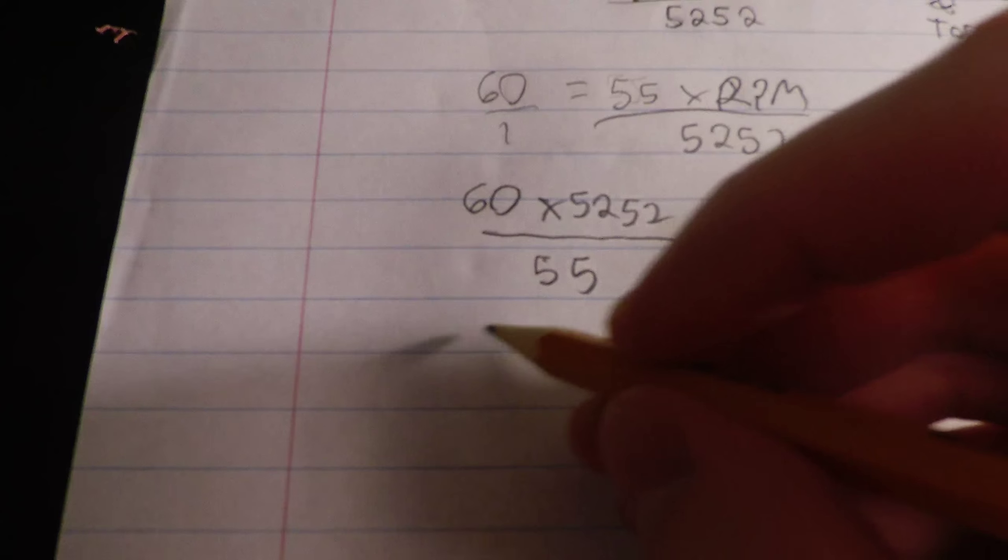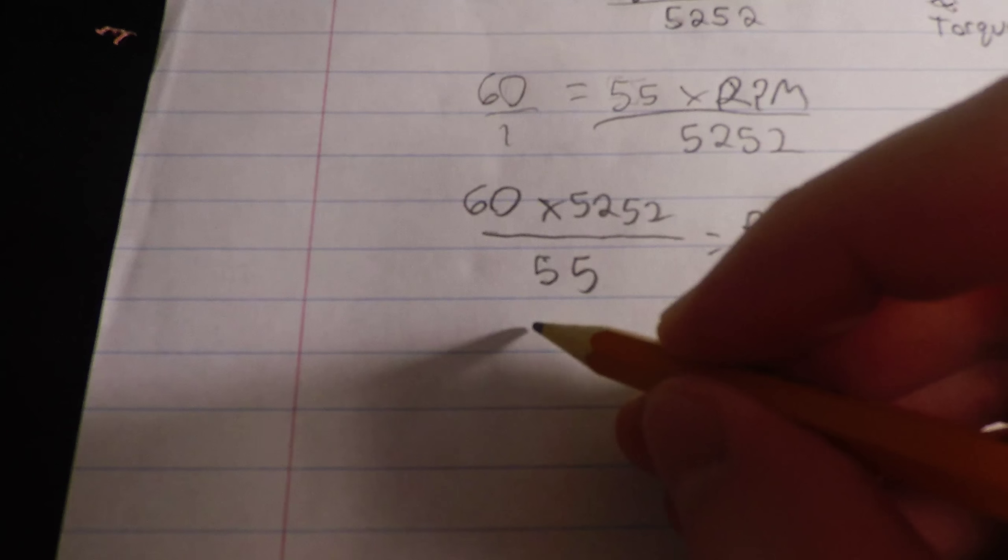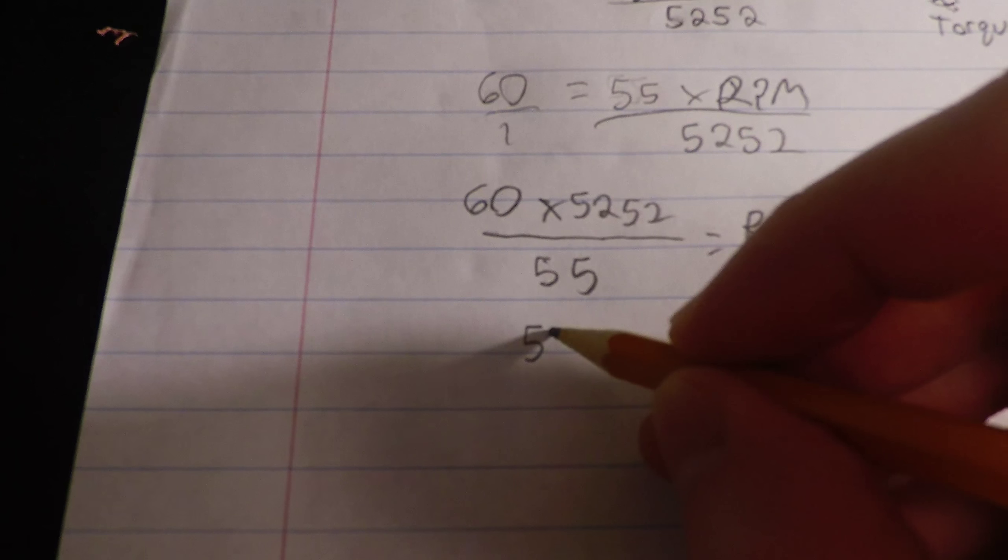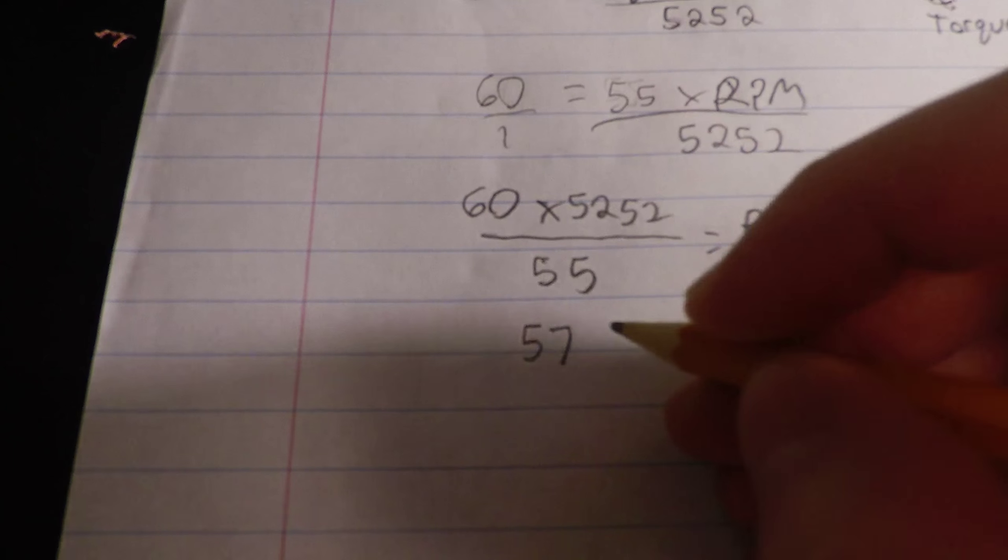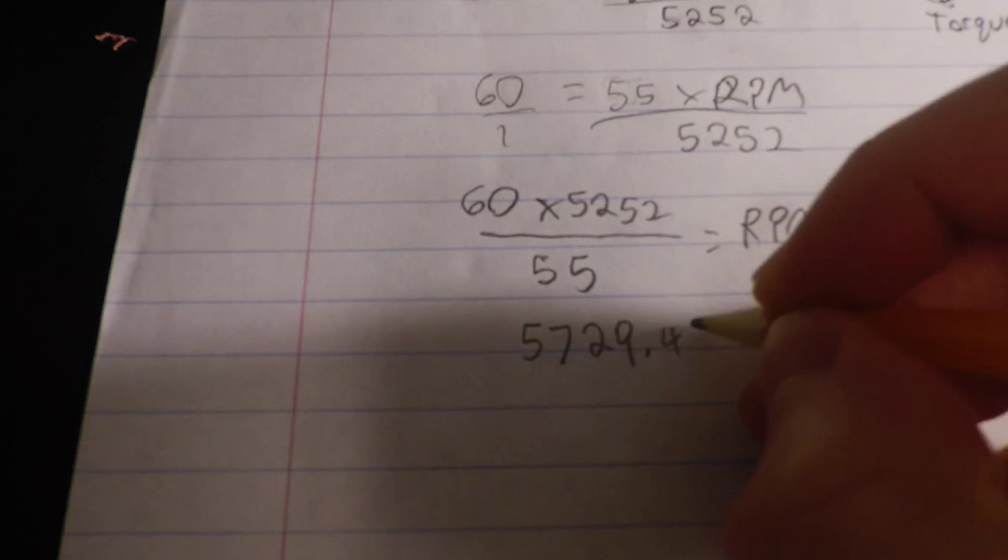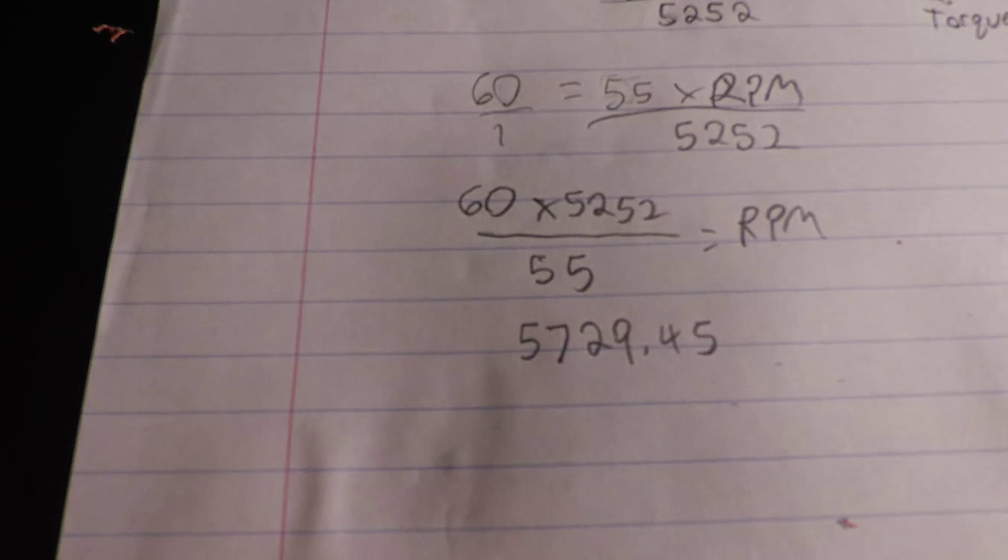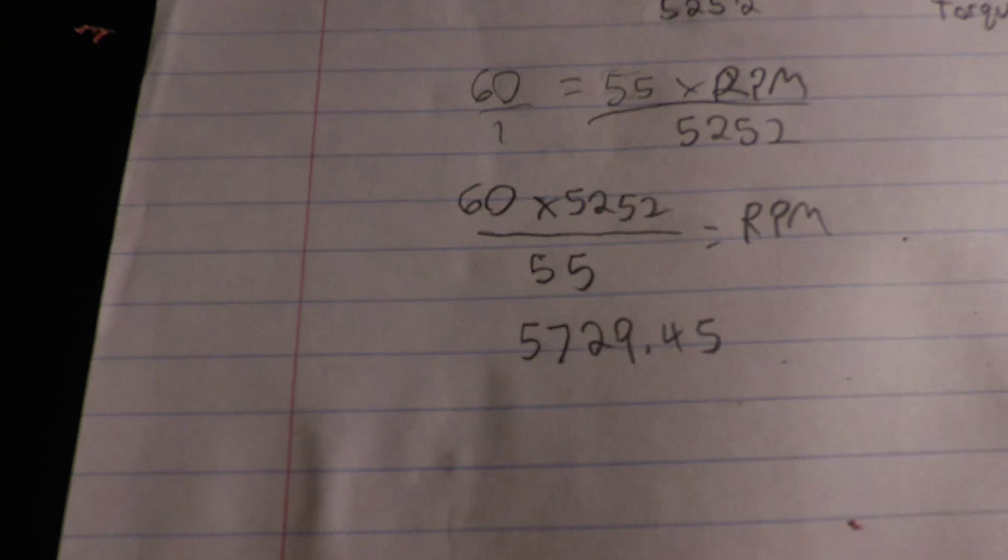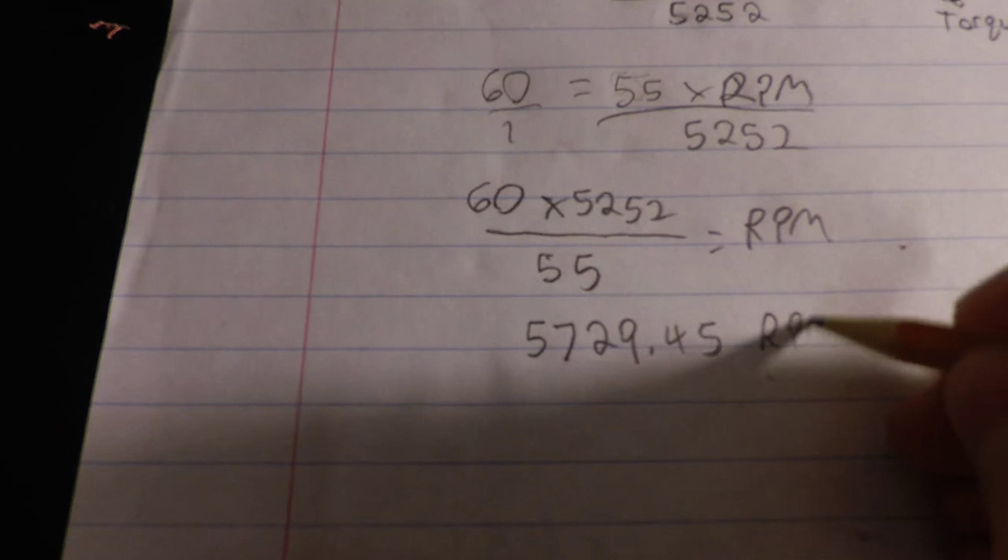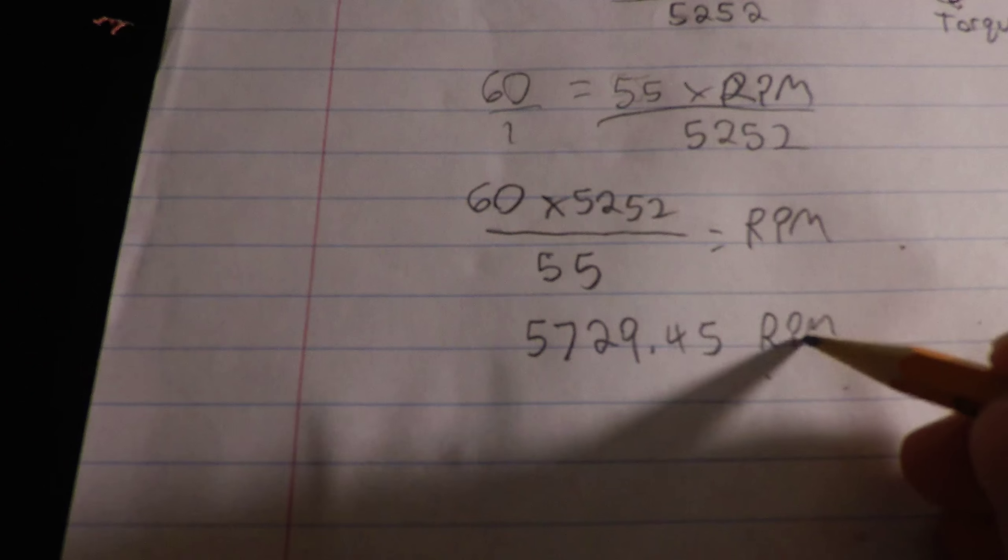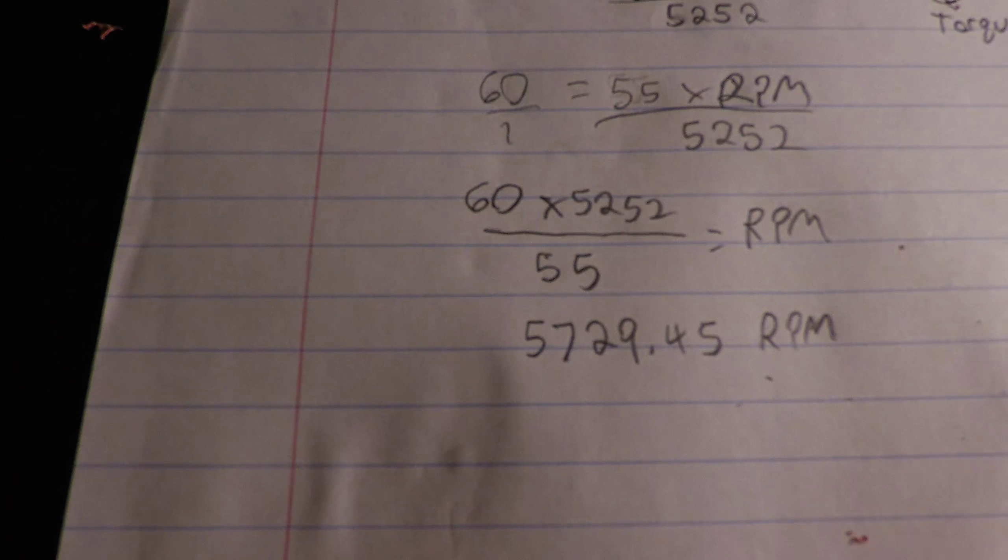And when we solve, we get 5729.45. So roughly 5729 RPM is when the Elio engine will make 60 horsepower.